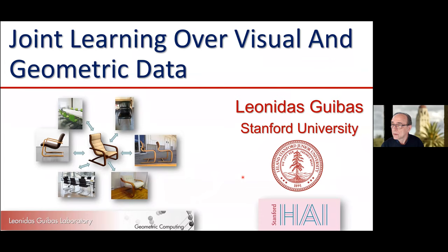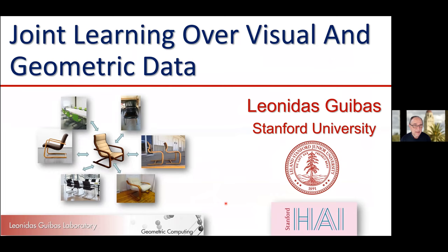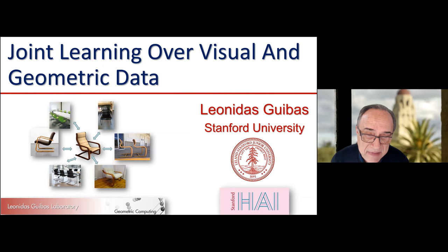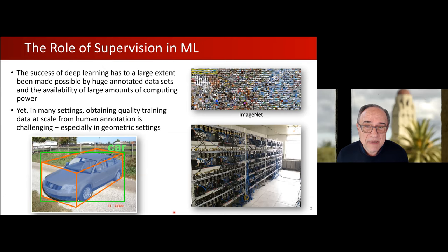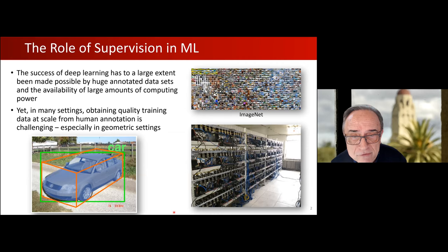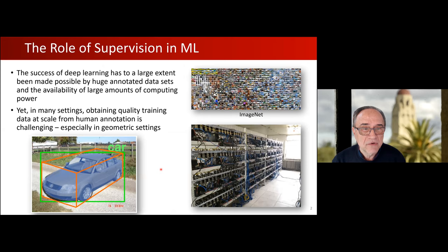I'll talk about a series of research efforts in my group over the past four to five years, centered around the theme of joint learning over visual and geometric data. To motivate this work: we all know there have been very impressive advances in computer vision and natural language processing through deep learning. But these advances require very large annotated datasets, such as ImageNet in the case of computer vision, as well as lots of GPUs and processing power.